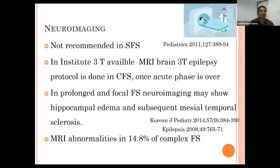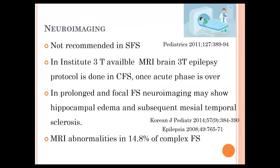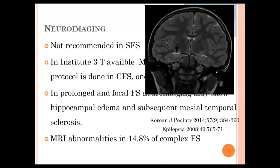Neuroimaging is not recommended in simple febrile seizure. Where three-tesla MRI is available, in complex febrile seizure, once the acute phase is over, we should order an MRI. In prolonged and focal febrile seizure, neuroimaging may show hippocampal edema and subsequent mesial temporal sclerosis. MRI abnormality is found in 14.8 percent of complex febrile seizure cases.